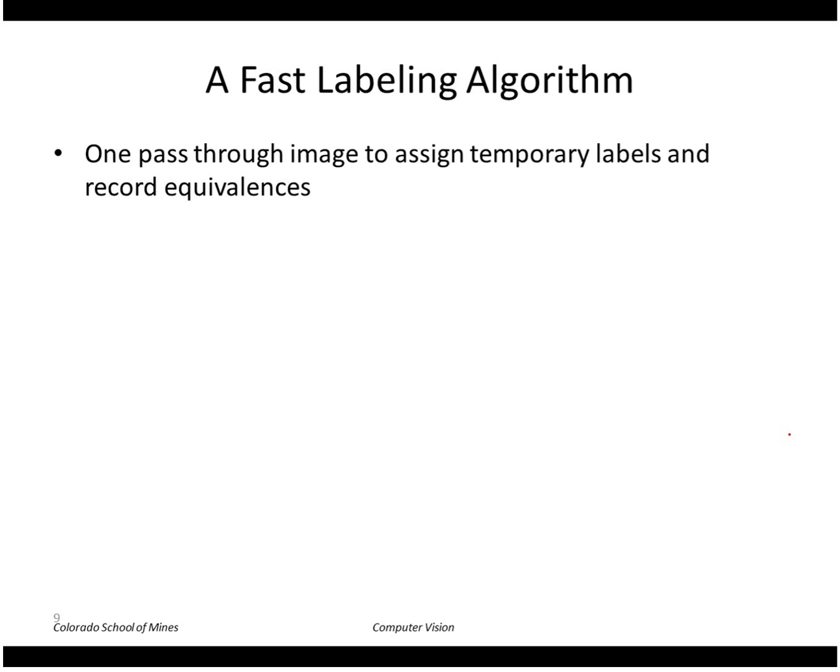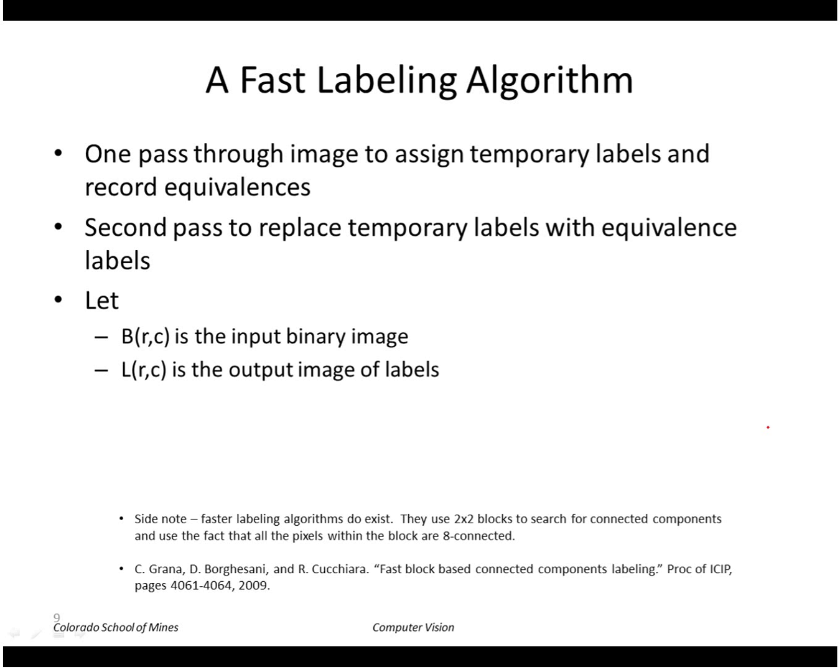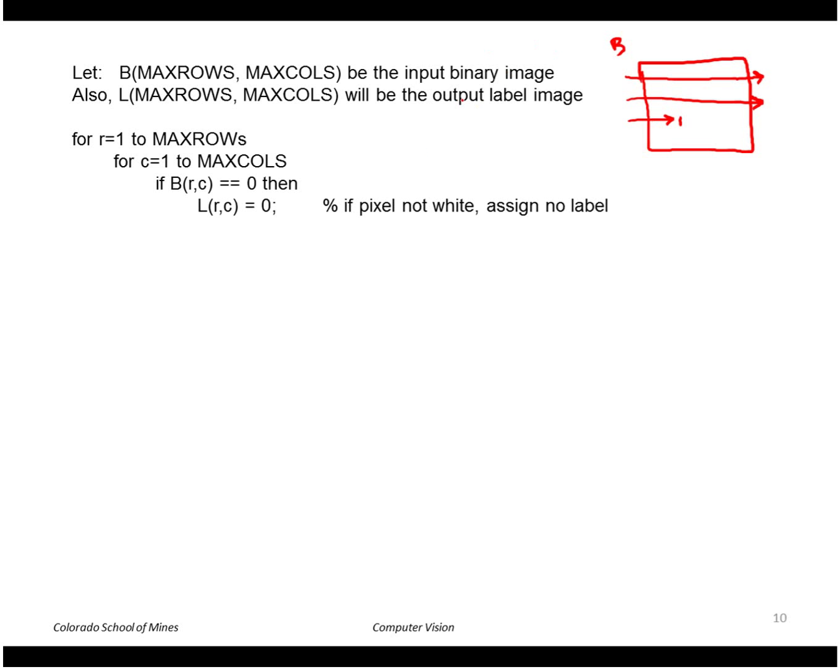Now it's really fast to do this kind of labeling. It really just takes one pass through the image to assign labels and record equivalences, and a second pass to replace the temporary labels with equivalence labels. So let's see how that works. We start with a binary image of ones and zeros, and we're going to produce a label image L. So we'll scan through the binary image from left to right, top to bottom, and look for ones. So when we find a one, if there is no one then we just output a zero for the label.